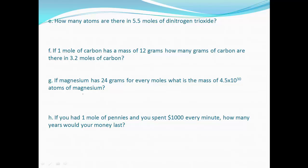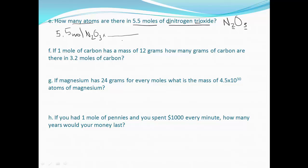We've got four more problems, combining the idea of moles and dimensional analysis. How many atoms are there in 5.5 moles of dinitrogen trioxide? You should be familiar with writing formulas for covalent compounds — dinitrogen means two nitrogens, trioxide means three oxygens. So we start with 5.5 moles of dinitrogen trioxide and want moles in the denominator.